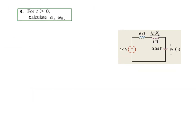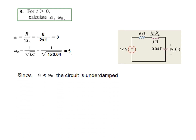Now we go to the third step: find alpha and omega. Simply plug in the values of R as 6 and L as 1, so alpha is 3. Similarly omega_0 is 1 over the square root of LC; plugging in L and C, omega_0 is 5. Now since alpha is less than omega, this circuit is an under damped circuit.